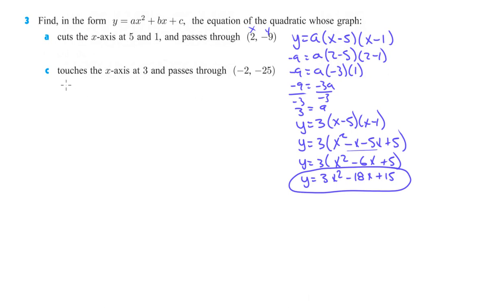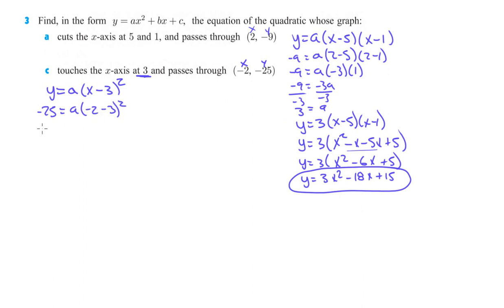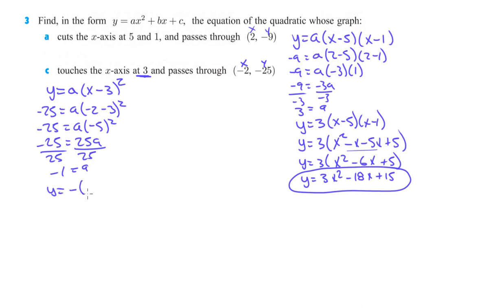Let's take a look at part c: touches the x-axis at 3 and passes through (negative 2, negative 25). If it just touches the x-axis at 3, that's a double zero at 3. So y equals A times (x minus 3) squared. We also know that when x is negative 2, y has to be negative 25. So negative 25 equals A times (negative 2 minus 3) squared, which is negative 25 equals A times (negative 5) squared, giving us negative 25 equals 25A. Divide by 25 and A equals negative 1.